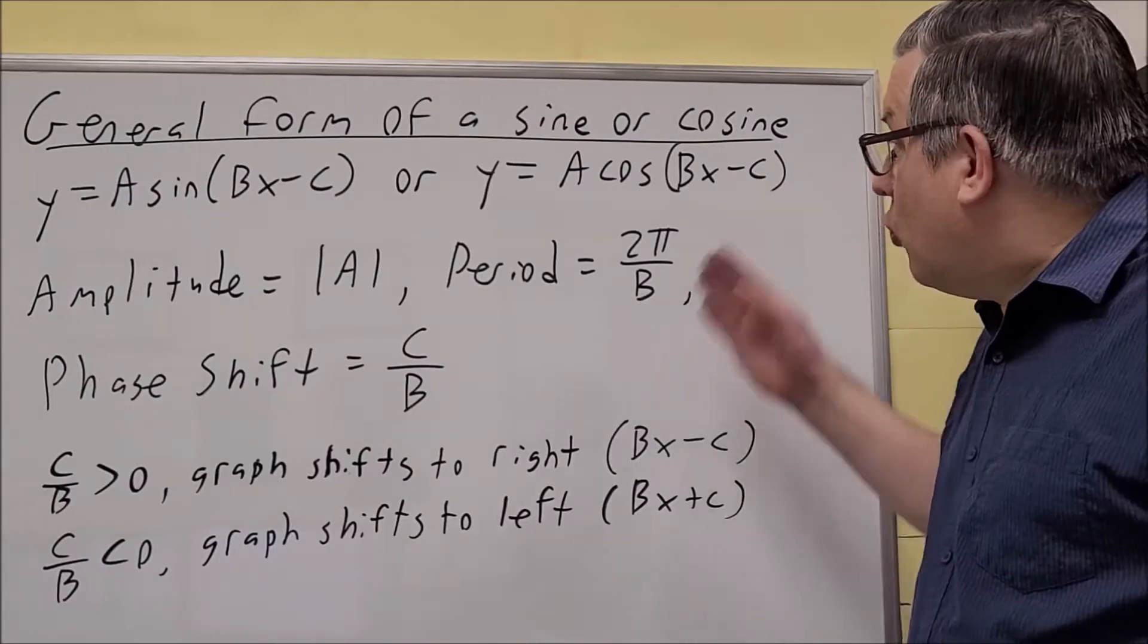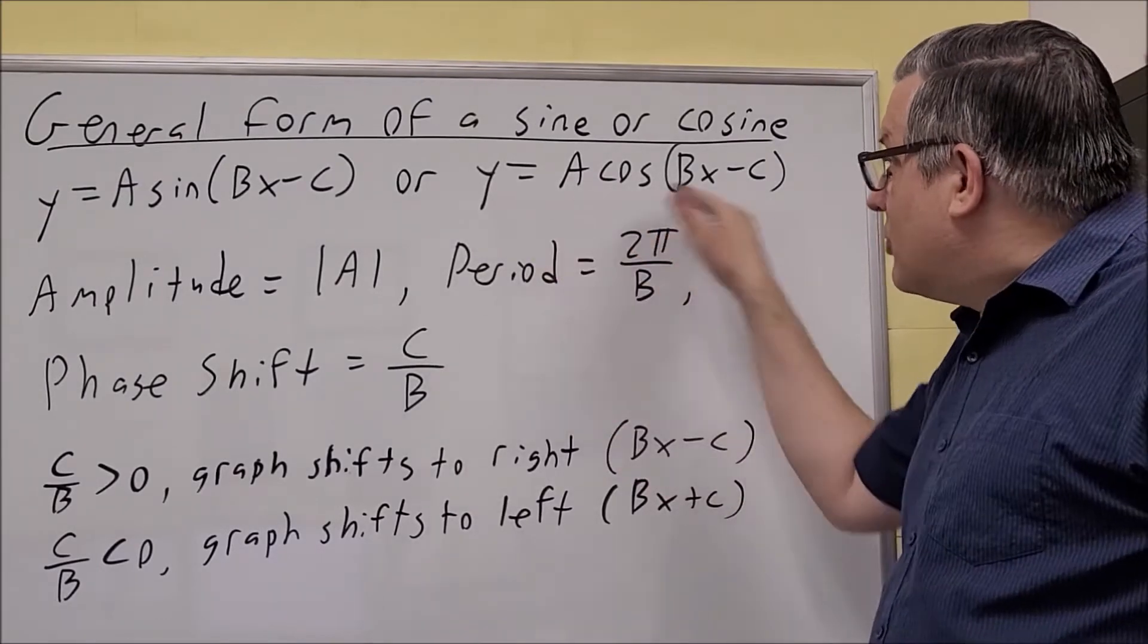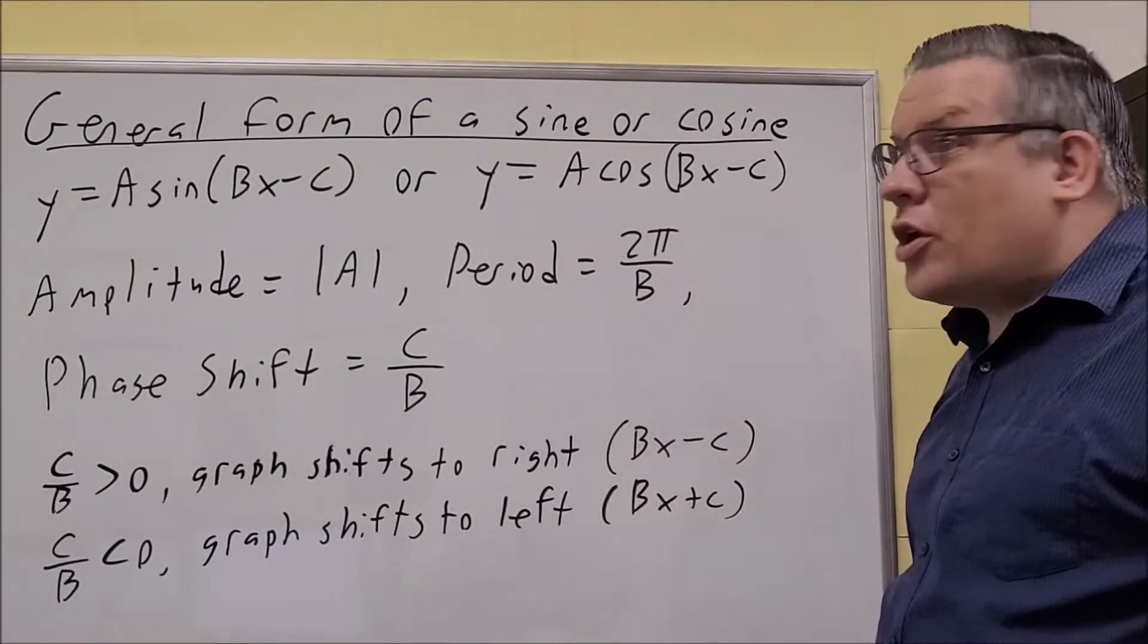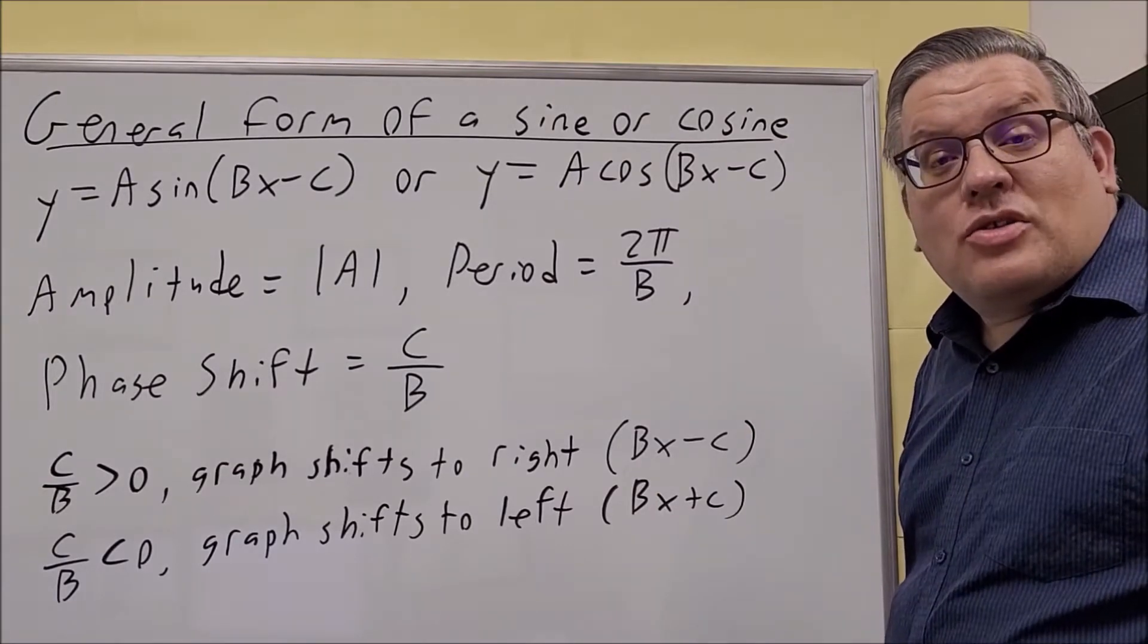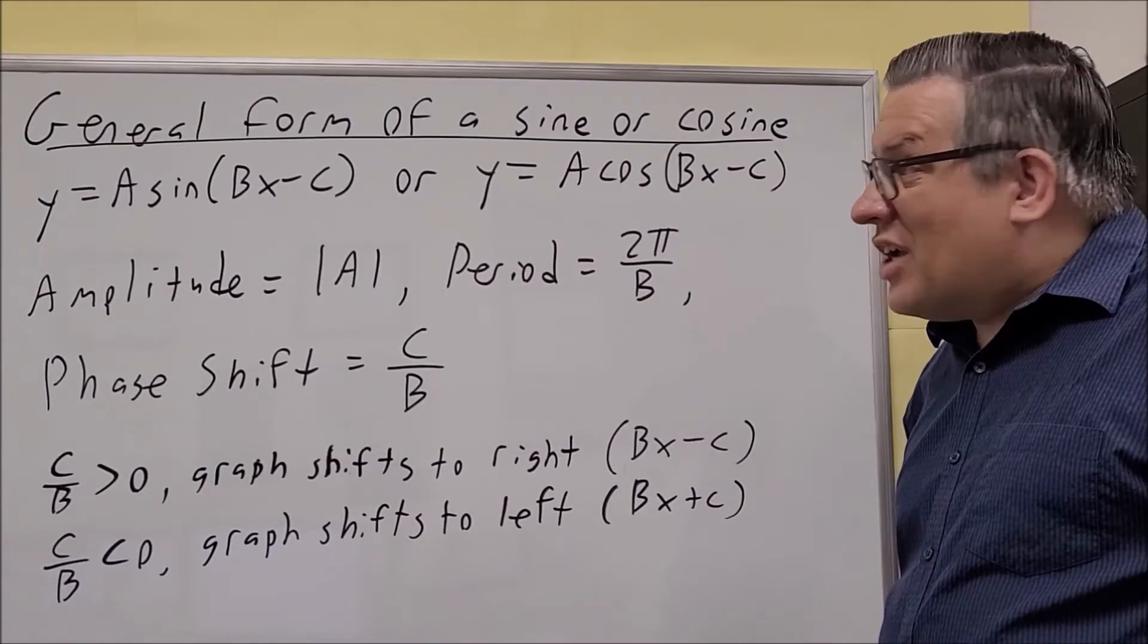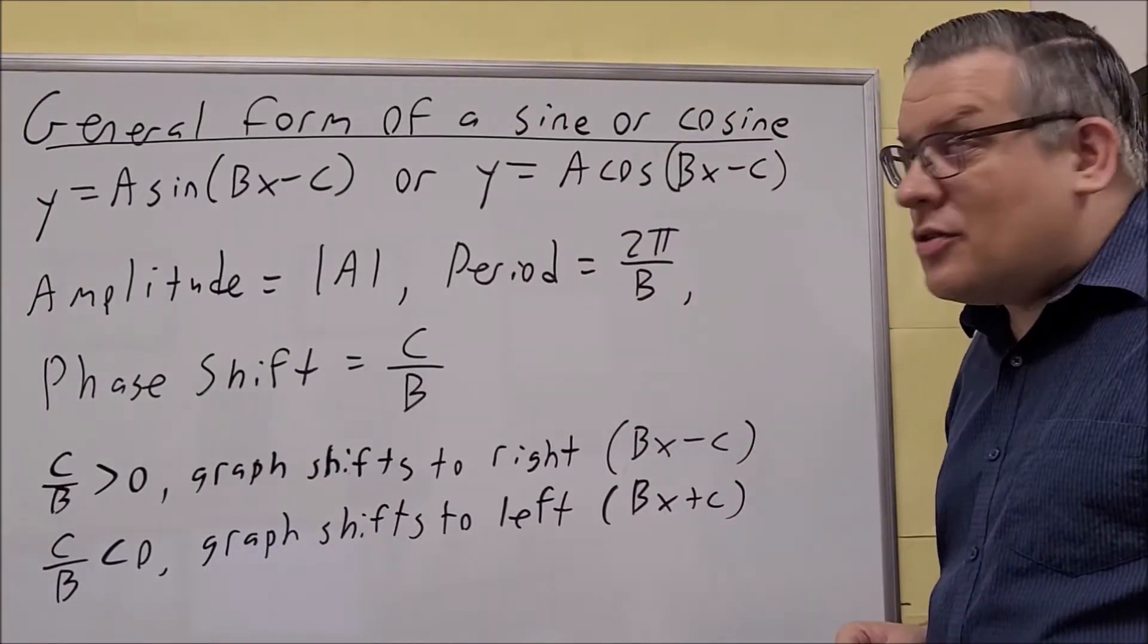Now we're going to move on and talk about what happens when you change that, when we have other things in play with these particular functions. So we're going to look at the general form of a sine and cosine function. We see them here, y equals A sin(Bx - C), y equals A cos(Bx - C).